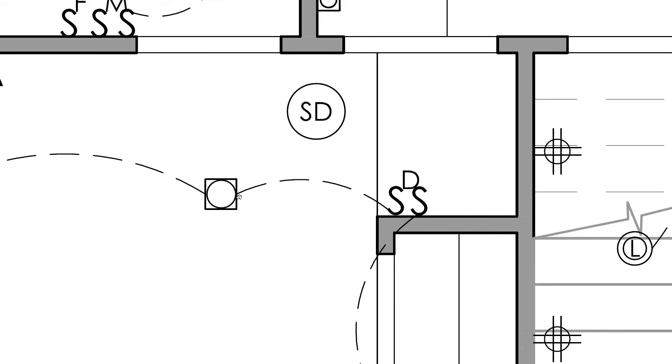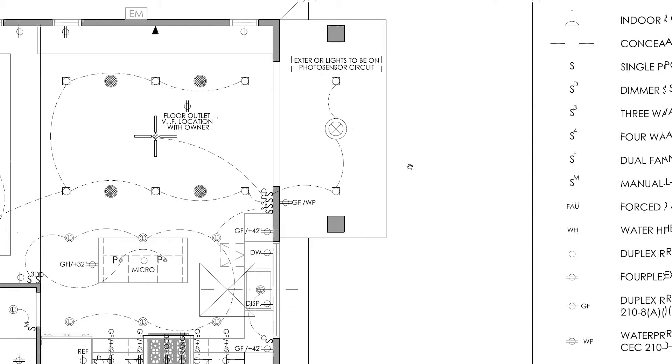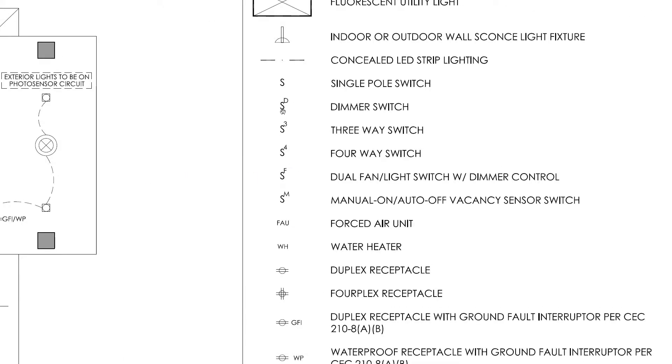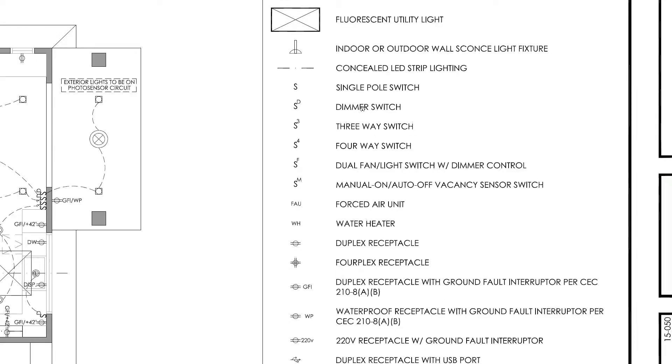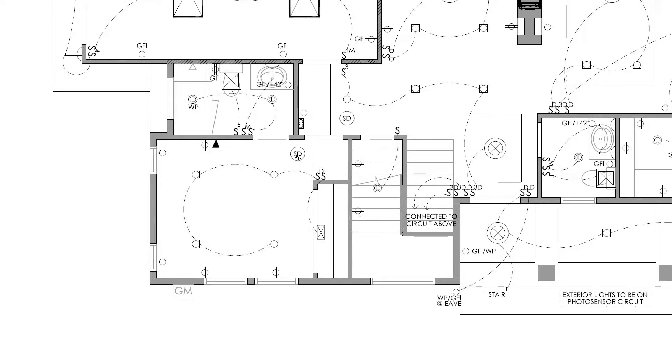The circuit also comes to this other symbol with an S and a D. If we go to the legend, we will find the same symbol and we can see that this is for a dimmer switch. Going back to the bedroom, there are other symbols — these are for outlets, this one for a data outlet, the smoke detector, and here there is another light in the closet that is connected to this other switch.